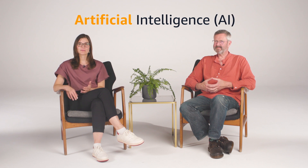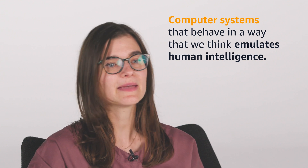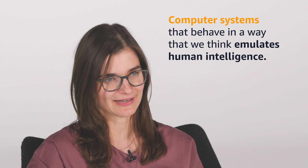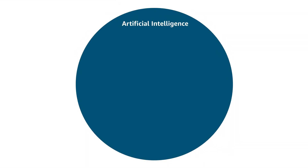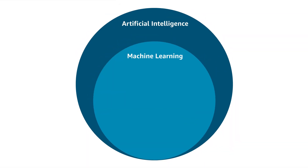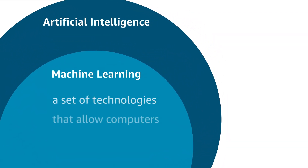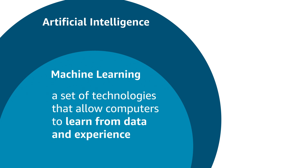Let's start by getting some of the terminology out of the way. Artificial Intelligence, or AI, is a term to describe computer systems that behave in a way that emulates human intelligence. Machine learning, or ML, sits within artificial intelligence and is an umbrella term for a set of technologies that allow computers to learn from data and experience.